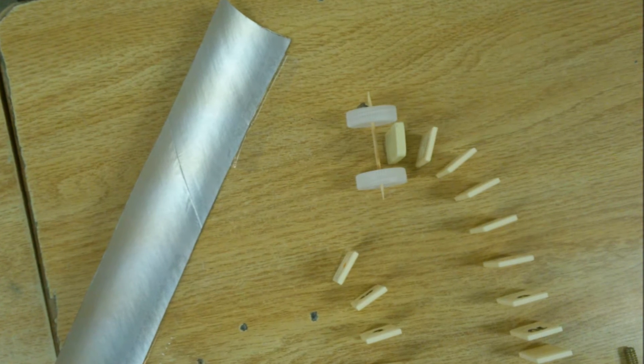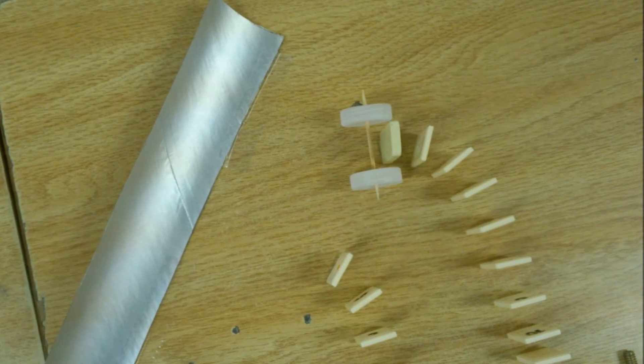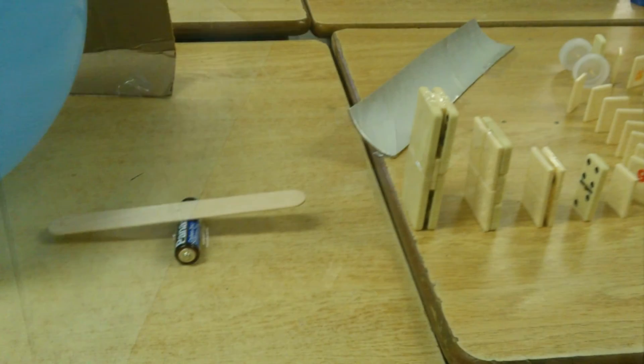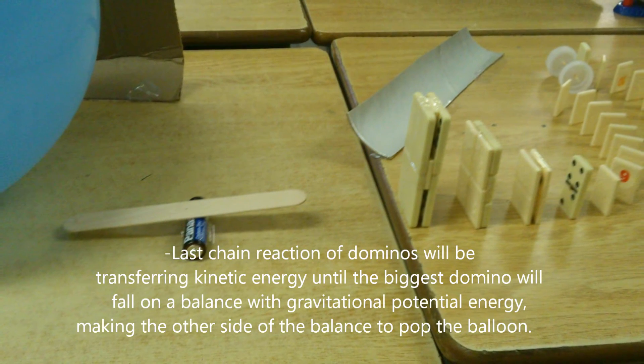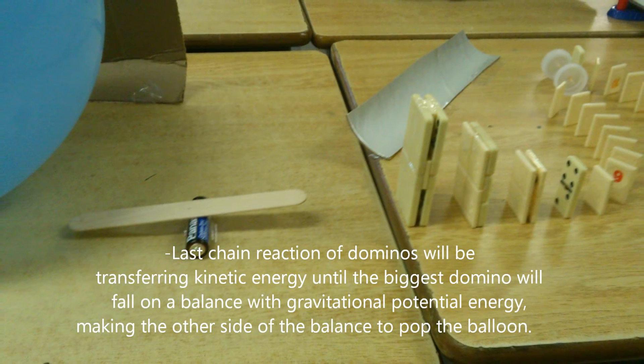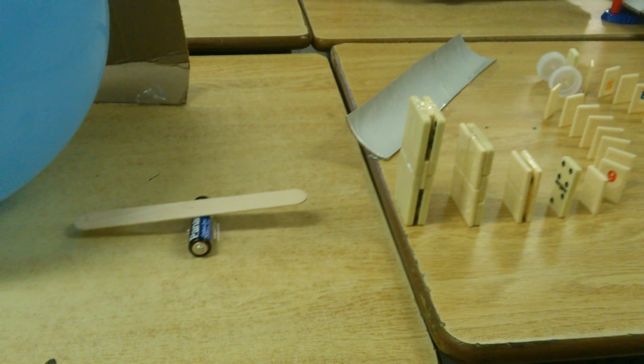The wheels will then hit the last set of dominoes which will be getting larger until the last one falls on a balance with gravitational potential energy, making the other side of the balance go up and pop the balloon with the needle.